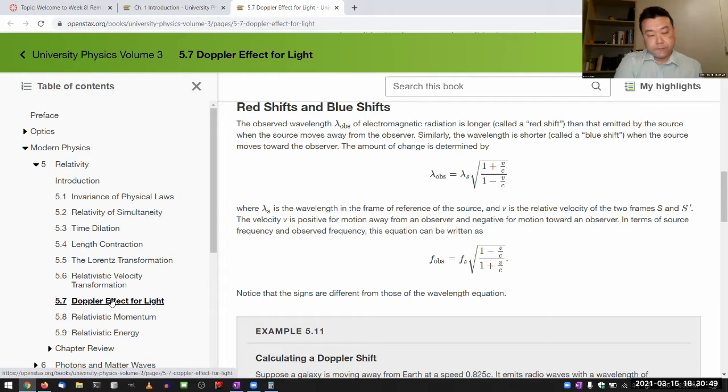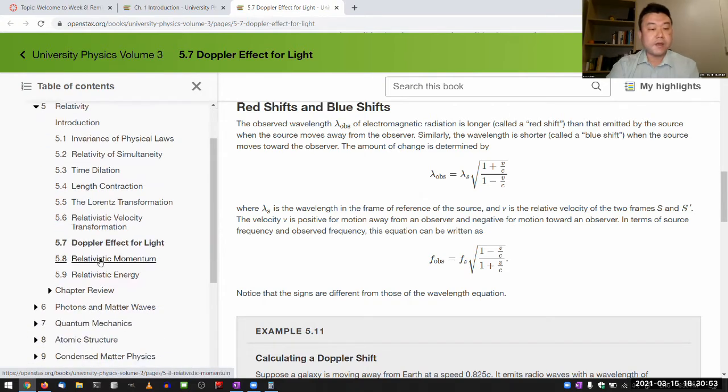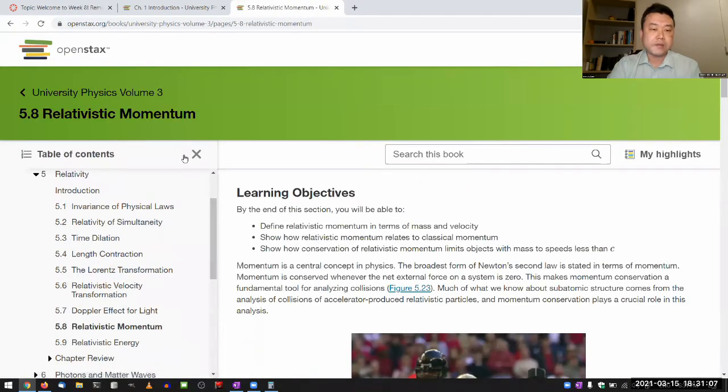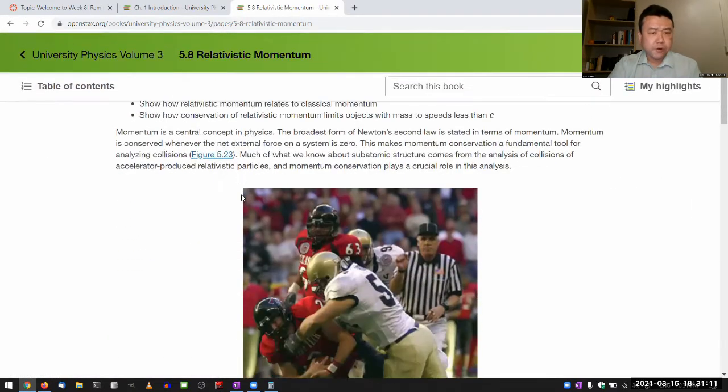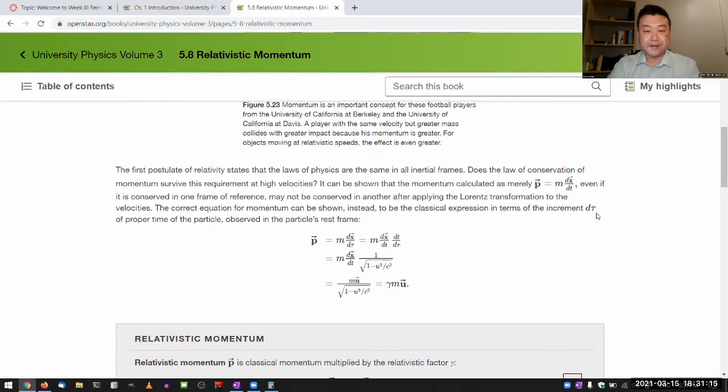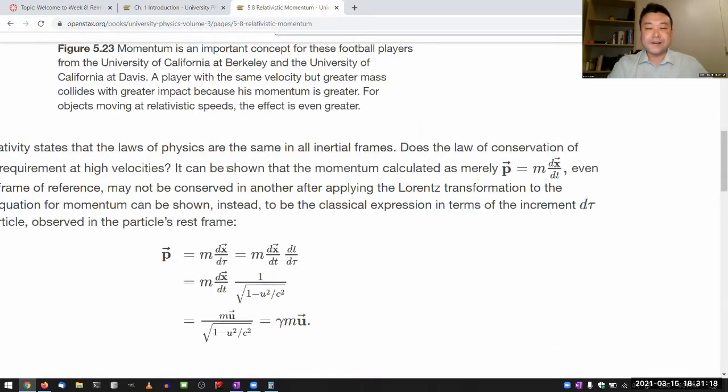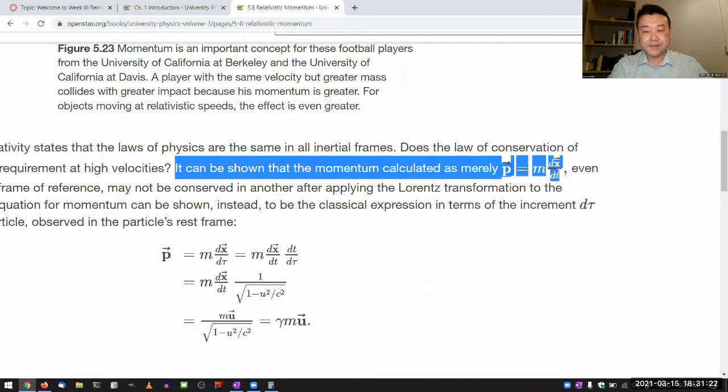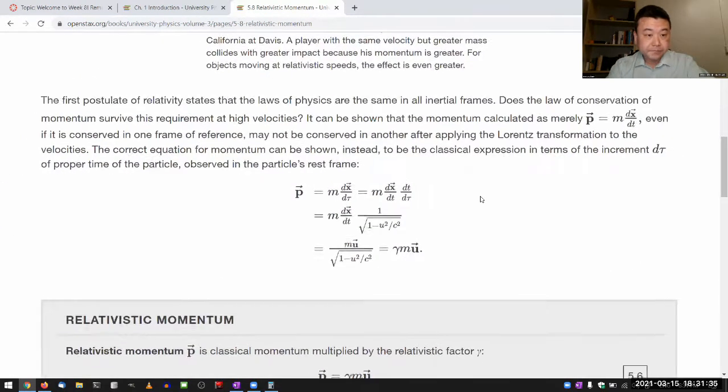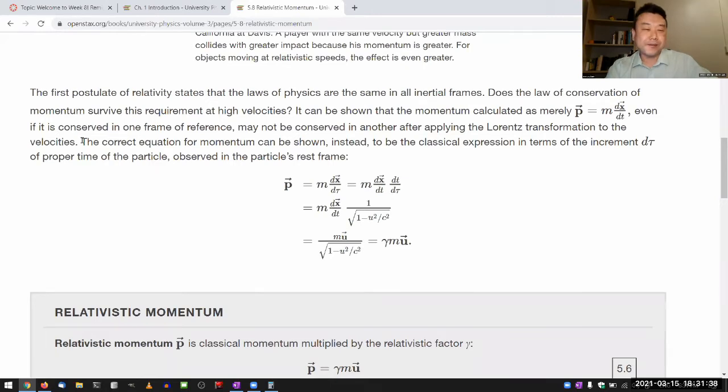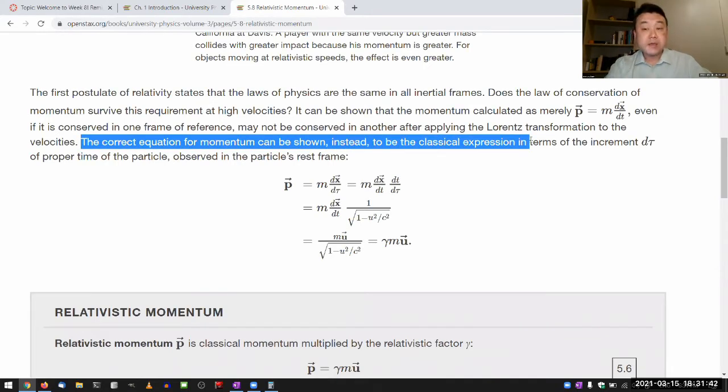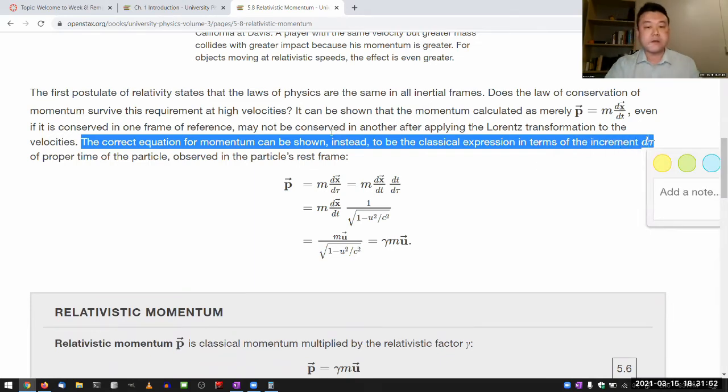The bulk of what we covered this week are relativistic momentum and energy, or what we might call relativistic dynamics, especially if you are looking at things that are interacting. Now, your textbook introduces relativistic momentum rather simply. And I think it's appropriate. It simply tells you that it can be shown that the momentum calculated as merely this quantity is the correct equation for momentum can be shown instead to be the classical expression in terms of the increment of the proper time. And I think for lower-division textbook, this is enough.